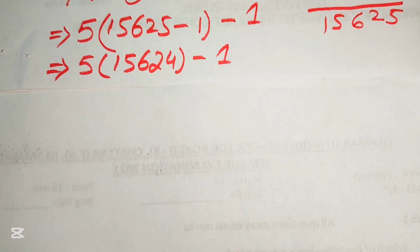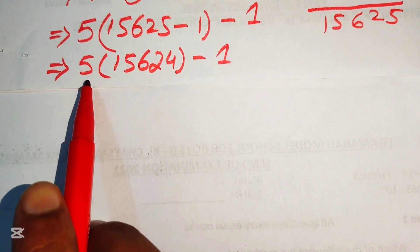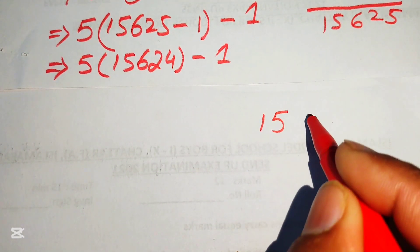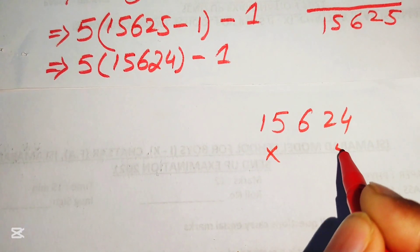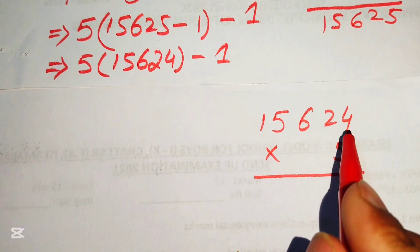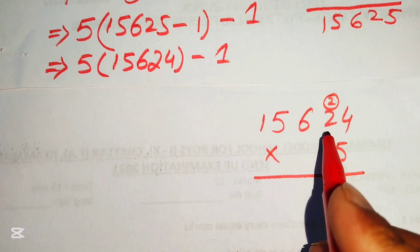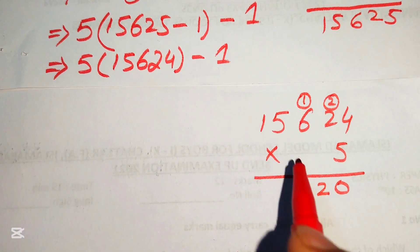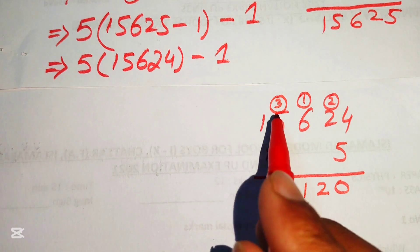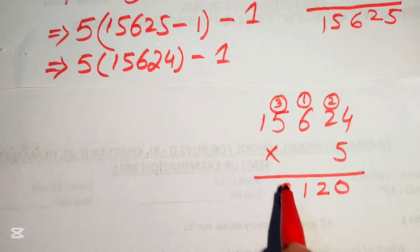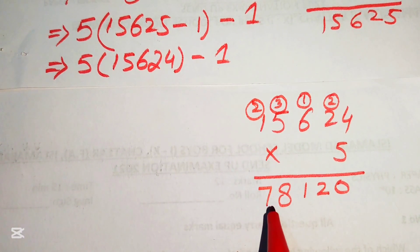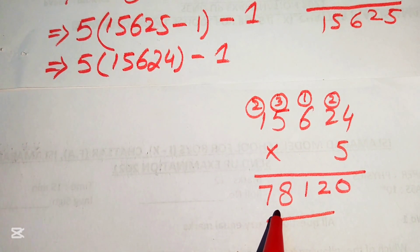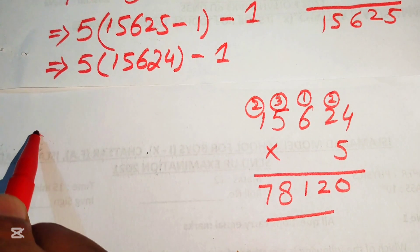We apply the traditional method of multiplication to find 5 times 15624. Writing 15624 multiplied by 5: 5 times 4 is 20, write 0 carry 2; 5 times 2 is 10, plus 2 is 12, write 2 carry 1; 5 times 6 is 30, plus 1 is 31, write 1 carry 3; 5 times 5 is 25, plus 3 is 28, write 8 carry 2; 5 times 1 is 5, plus 2 is 7. So 5 times 15624 equals 78120.